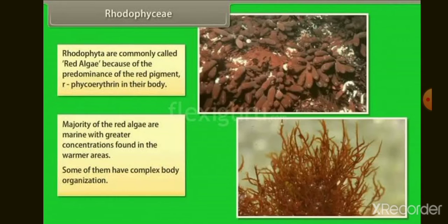Members of class Rhodophyta are commonly called Red Algae. Why are they called Red Algae? That is because of the predominance of the red pigment R-Phycoerythrin in their body. So Rhodophyta are commonly called Red Algae because of the predominance of the red pigment R-Phycoerythrin.